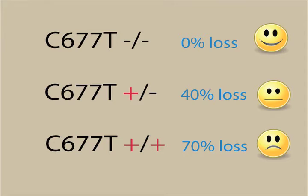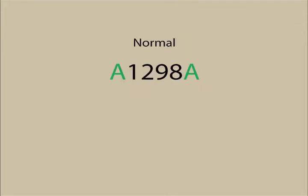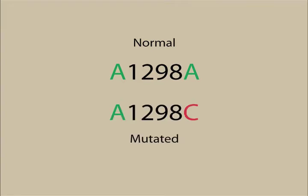The other MTHFR gene mutation is called A1298C. A normal, unmutated gene is called A1298A. A mutated gene is called A1298C. Notice that one of the adenines has been replaced by a cytosine. Again, this one small change is enough to impair its functioning.